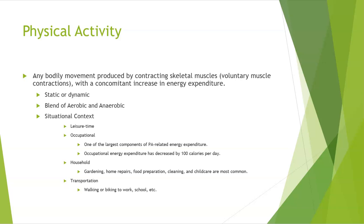Interestingly, occupational energy expenditure has decreased by 100 calories per day. Household activities — so gardening, home repairs, food preparation, cleaning, and child care — are the most common ways to gain physical activity by doing household chores. And transportation, such as walking or biking to work or school.